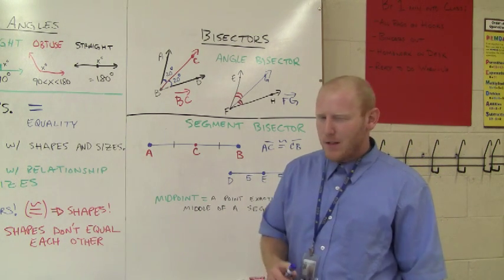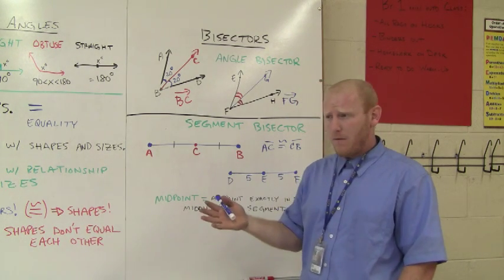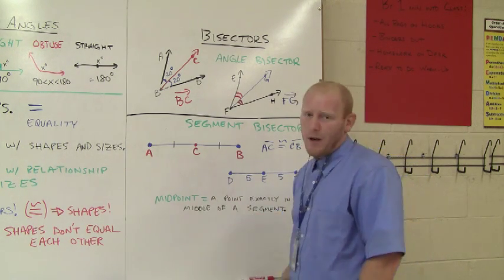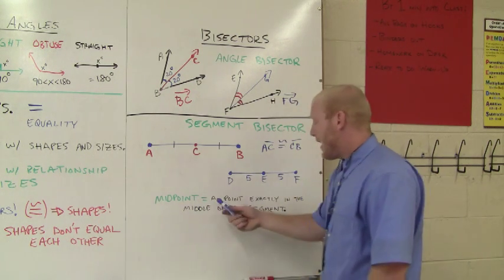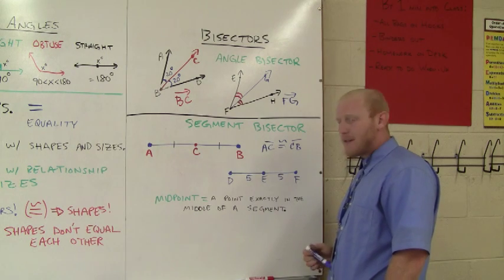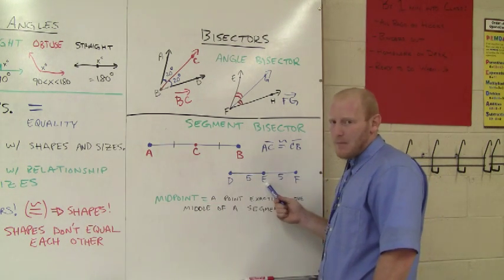Now a special vocab—it seems kind of common sense, but I'm still going to say it. Midpoint. All midpoint is an abbreviation for middle point. It is a point exactly in the middle of a segment. So C would be a midpoint, and E is a midpoint.